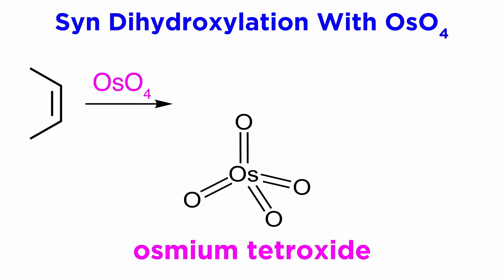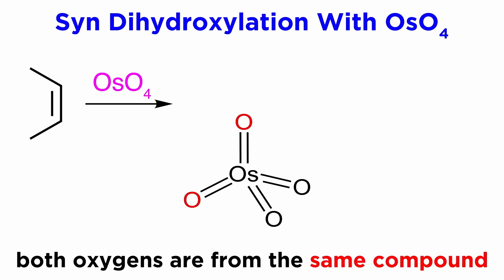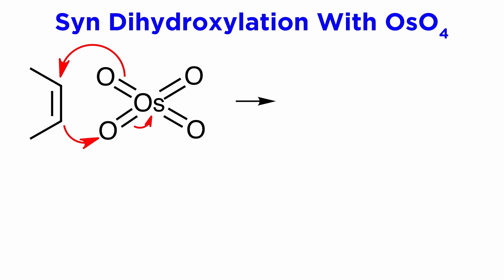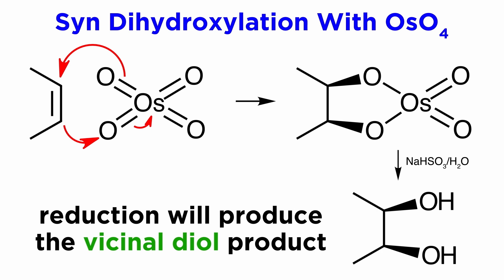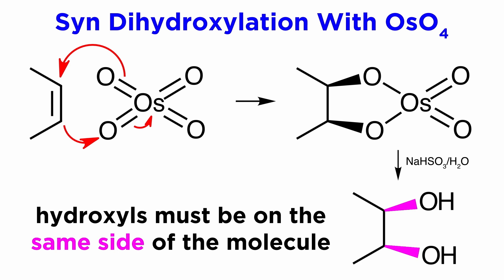One reagent we can use to achieve a syn-dihydroxylation is osmium tetroxide, or OsO4. This promotes syn addition because both of the oxygen atoms being added come from the same compound, so it's a little bit like catalytic hydrogenation, where the hydrogens are added from the solid catalytic surface. Here we have a shuffling of electrons that will produce a cyclic intermediate, and then some kind of reducing agent will kick off the osmium and yield the two hydroxyl groups. As we can see, these must be cis to one another on the product, because it was a syn addition. Even with linear molecules where we can't use cis and trans to describe the product, we must still be aware of our stereochemistry as we want to draw the correct stereoisomer for our product. Just make sure to add the hydroxyls to the same side of the pi bond and everything will work out.